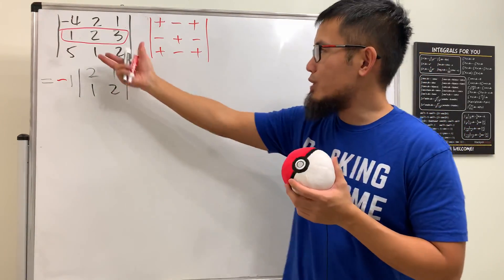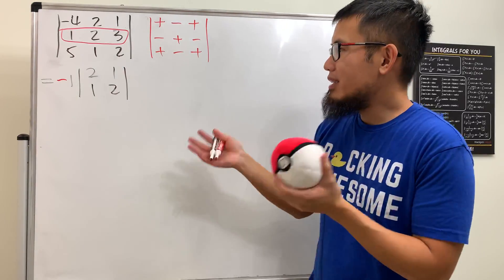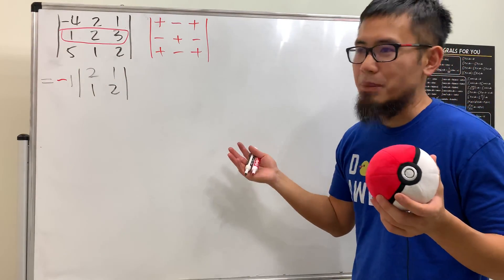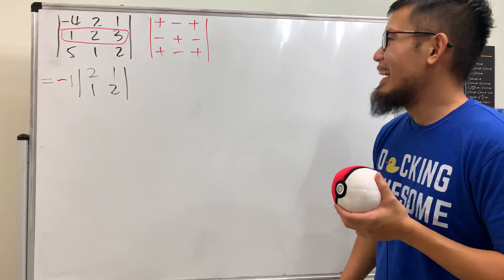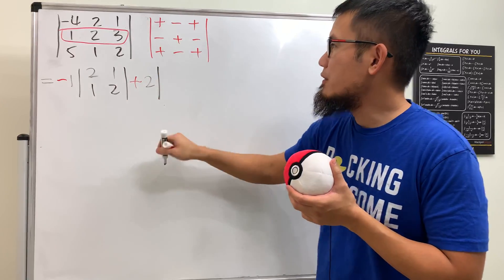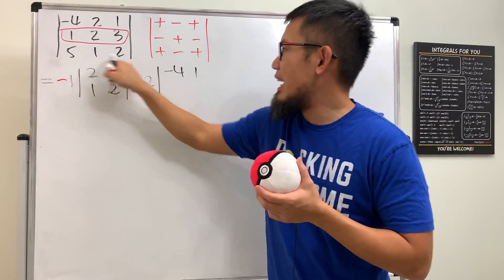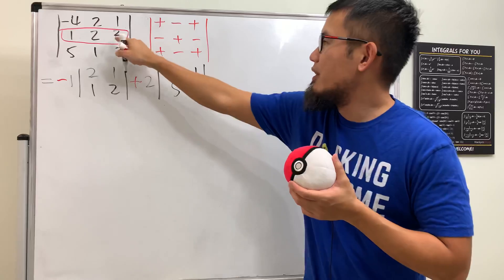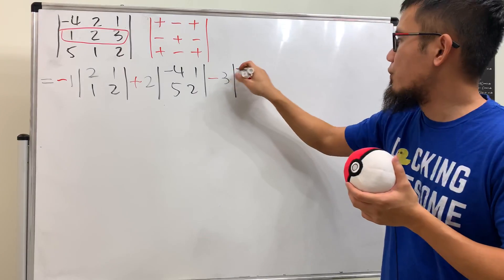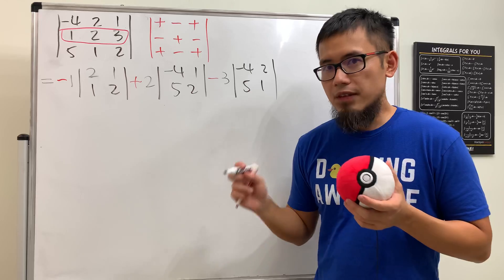We were working with a three by three matrix and now it's a two by two — it gets smaller and smaller, which is why cofactor expansion works for any size. Next we have plus two, multiplied by the determinant of negative four, one, five, two. Lastly, minus three times the determinant of negative four, two, five, one.